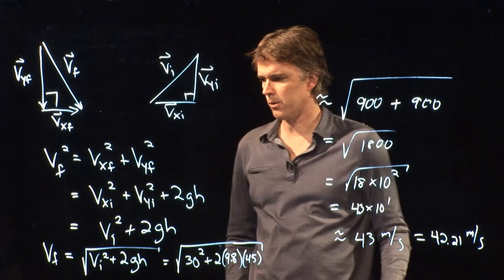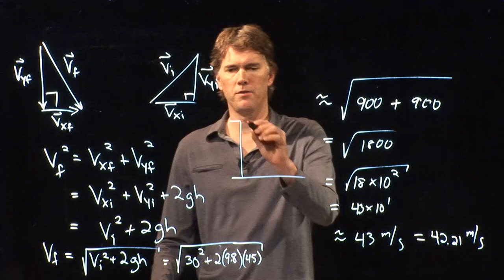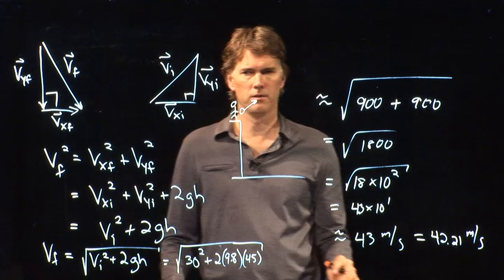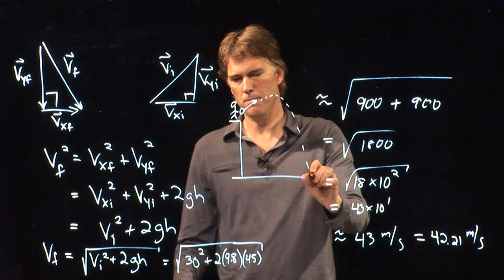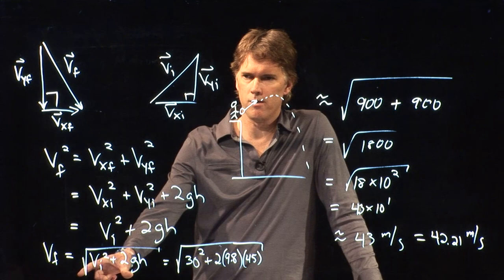Now, let's think about this for a second and let's go back to this equation. We have VF equals square root of VI squared plus 2GH. But remember in our picture we actually launched this thing upward.